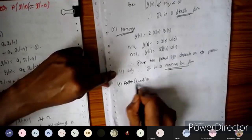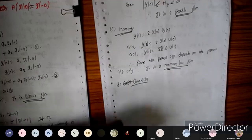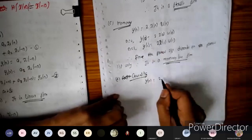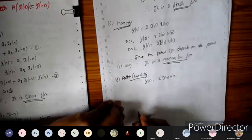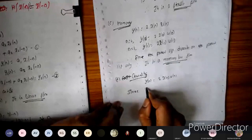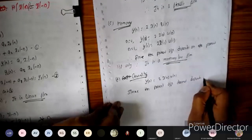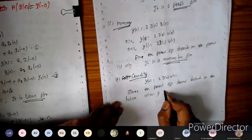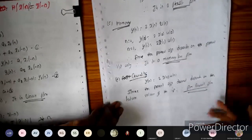For causality: since the present output does not depend on future values of the input, the system is a causal system.